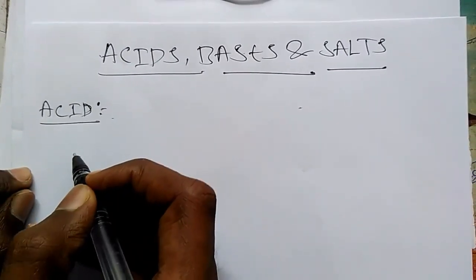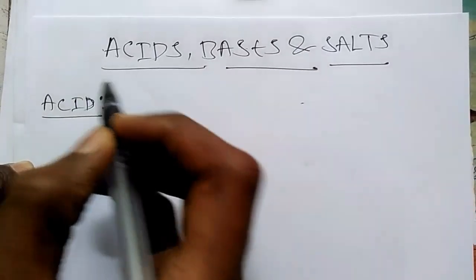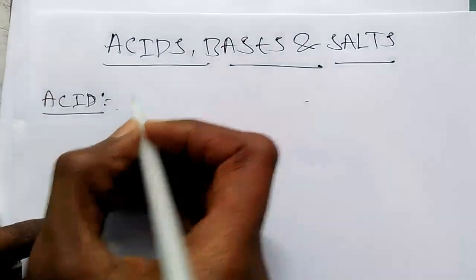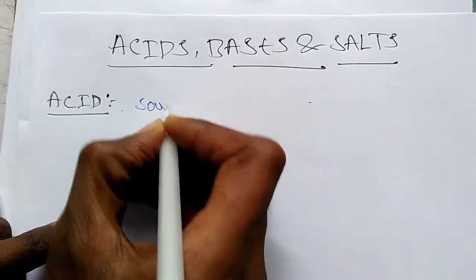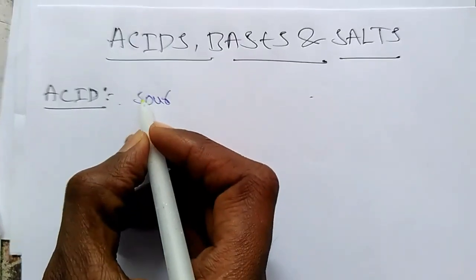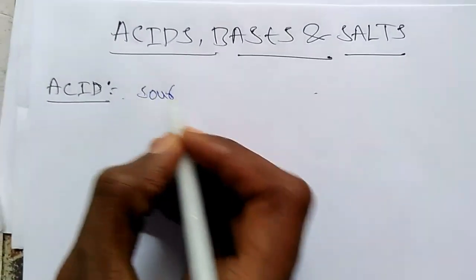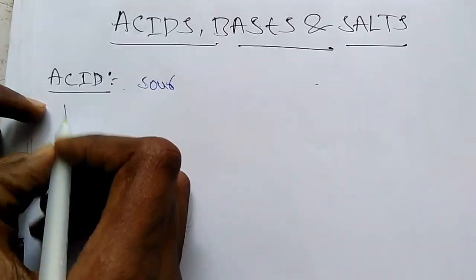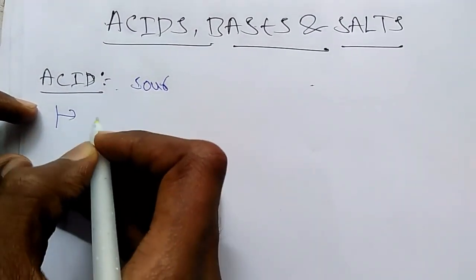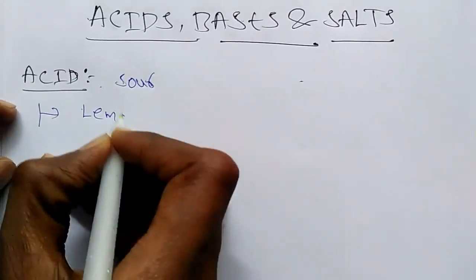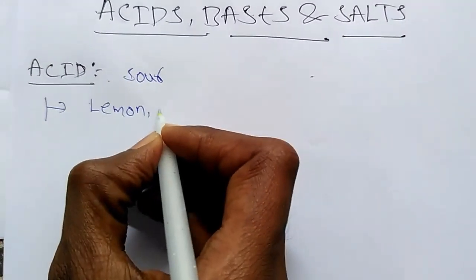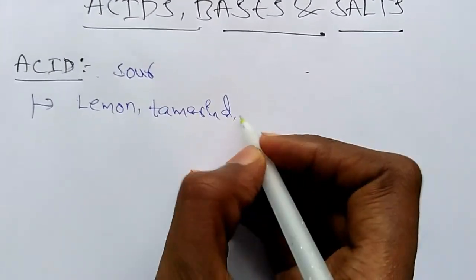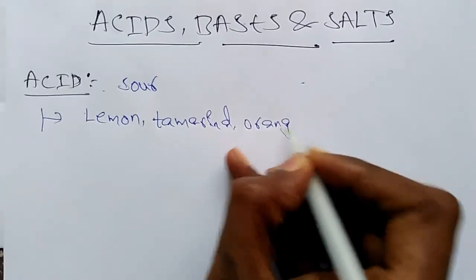What is the basic acid definition? The substance which has a sour taste is known as acid. The substance with sour taste — same as lemon, tamarind, and orange — these are natural elements with acidity.